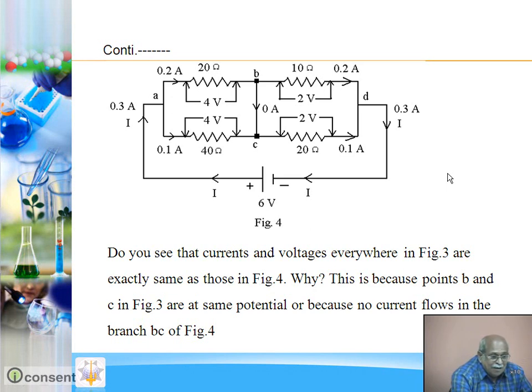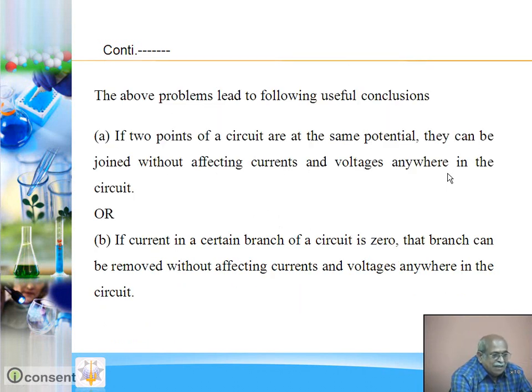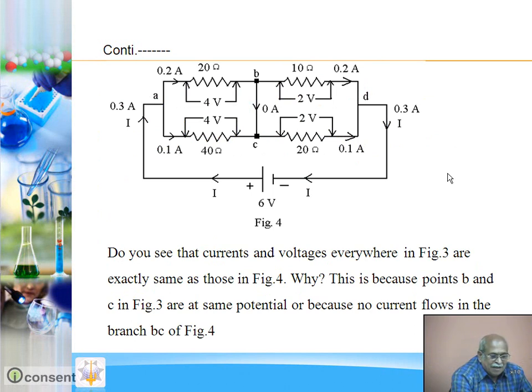Why does it happen? Figure 1 and Figure 2 are quite different. Then, several currents and potential differences are identical. So what do we observe? The solutions of Figure 1 and Figure 3 are exactly the same. Why does this happen? The reason is, points B and C are at same potential: VB equal to VC. In other words, current between B and C is 0. No current flows between points B and C.